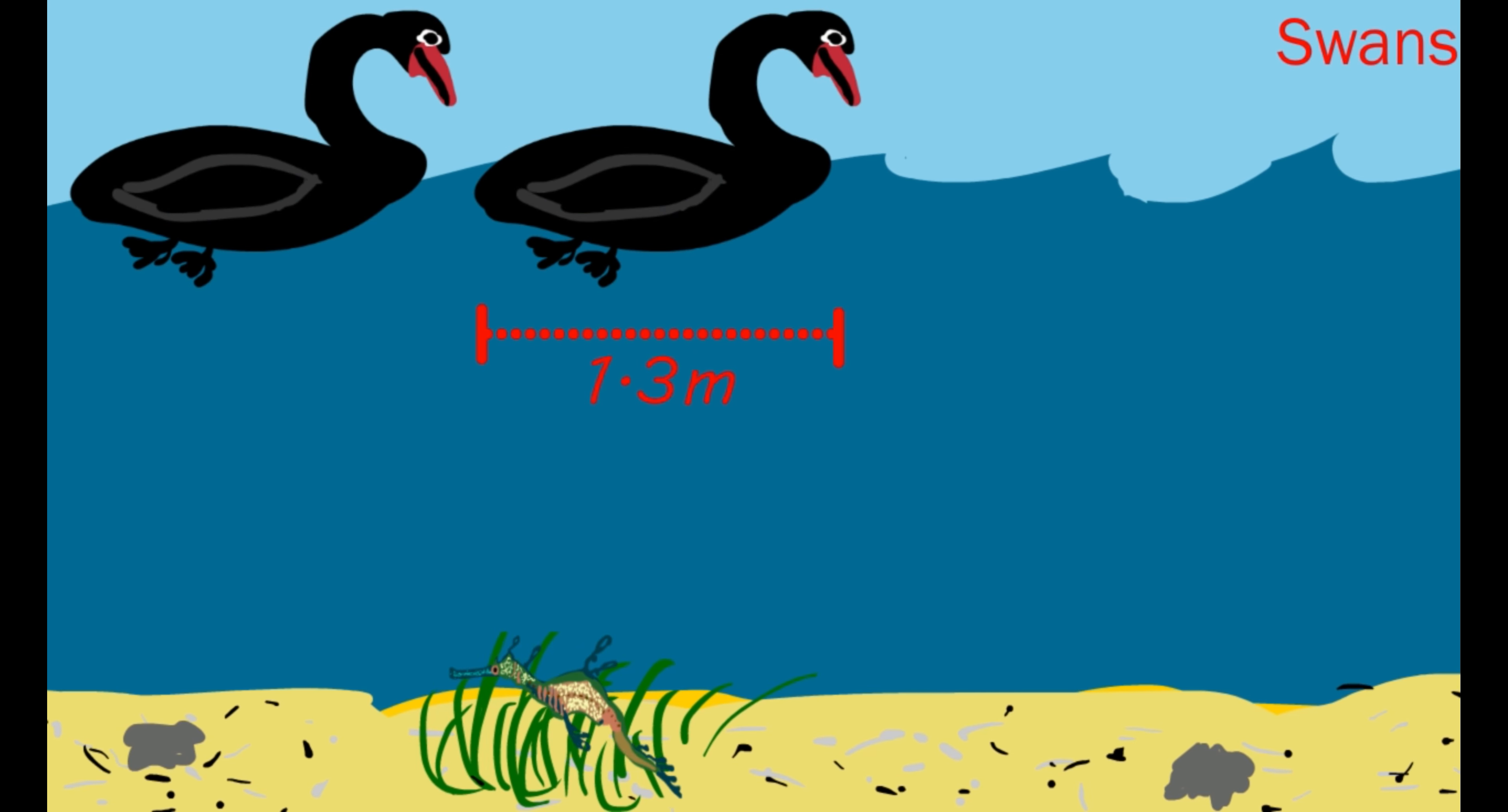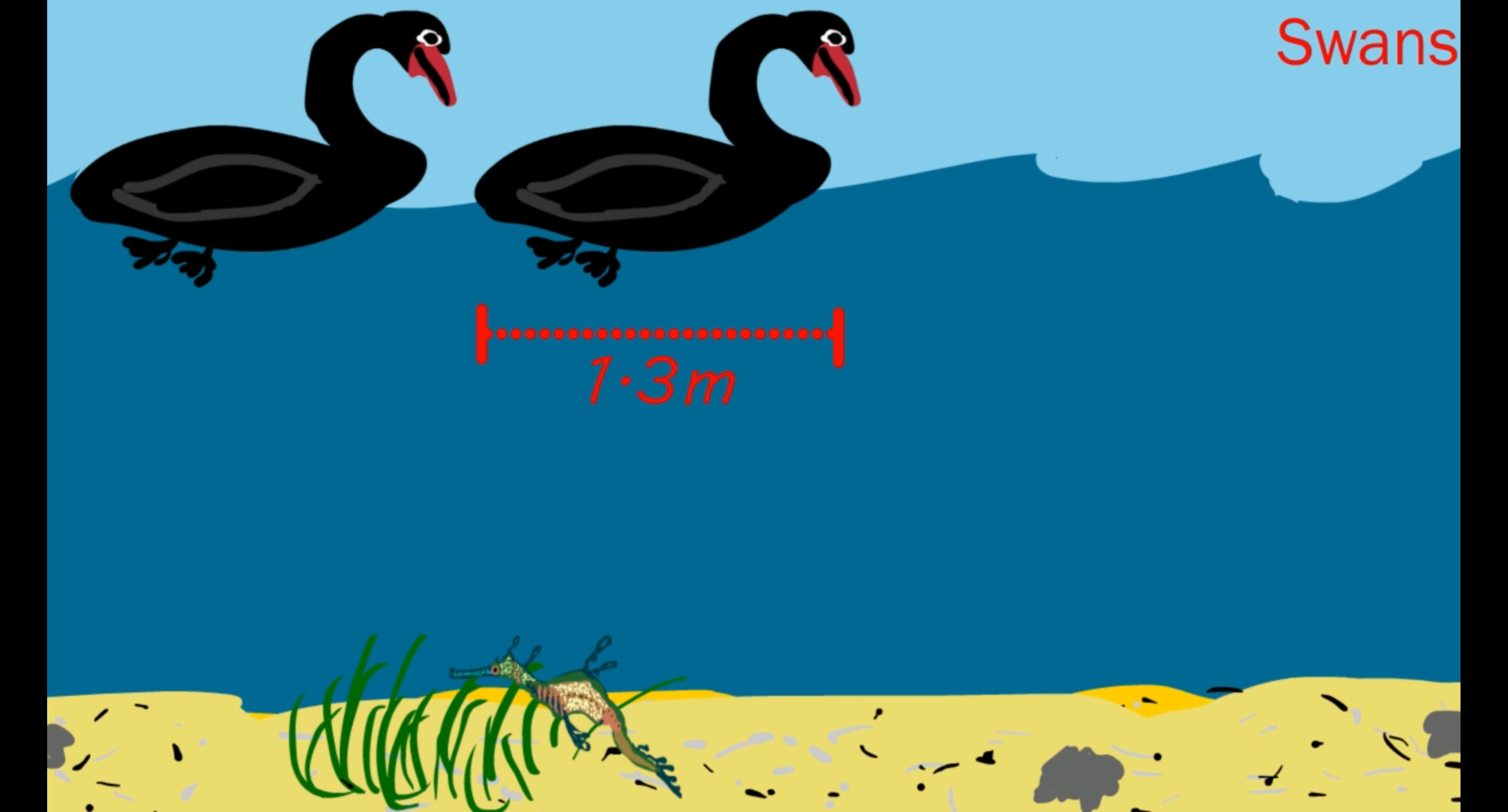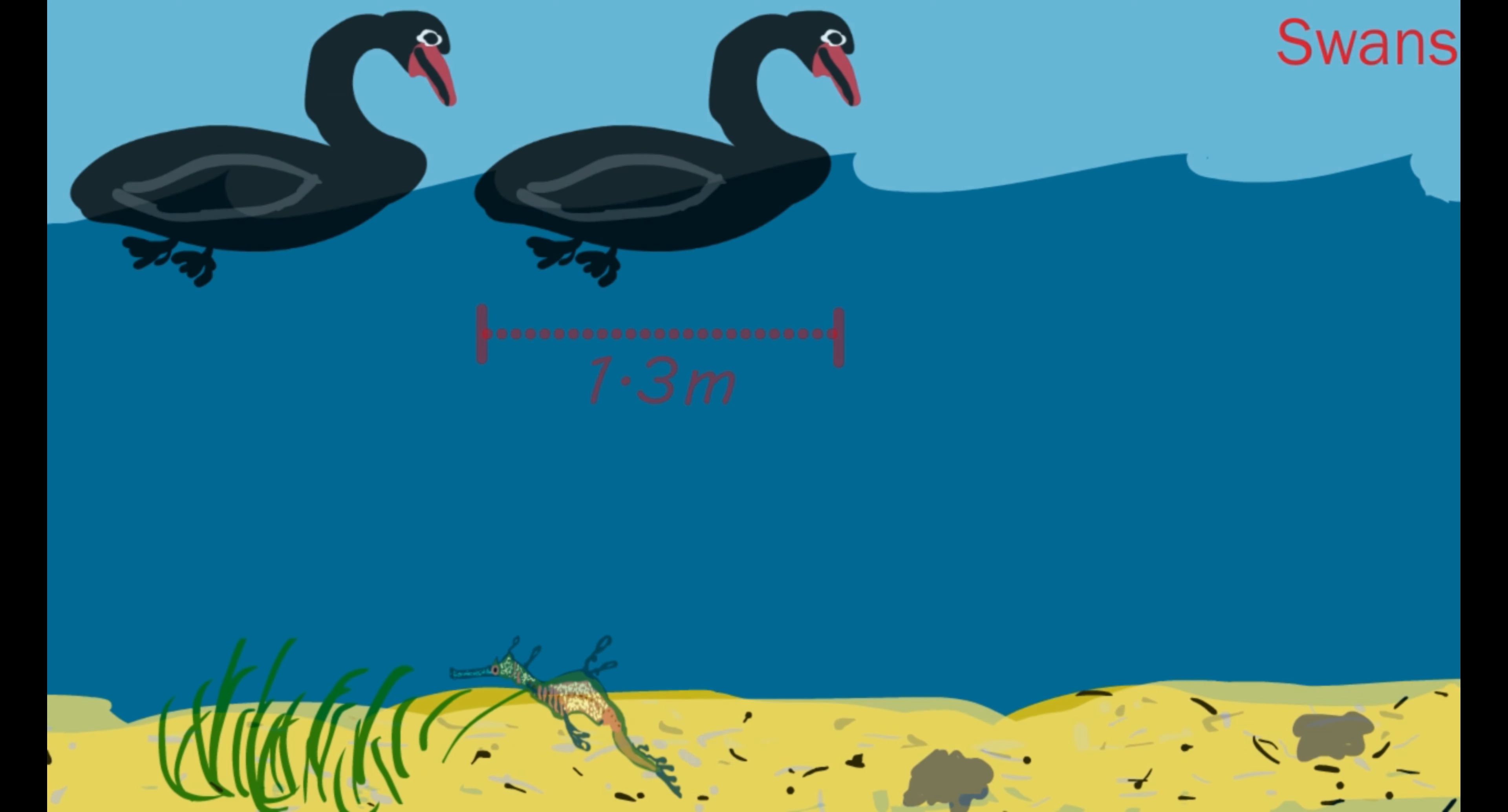While the weedy sea dragons call the seagrass beds home, swans call seagrasses food. The swans are usually less than 1.3 meters long and live in and alongside the water.